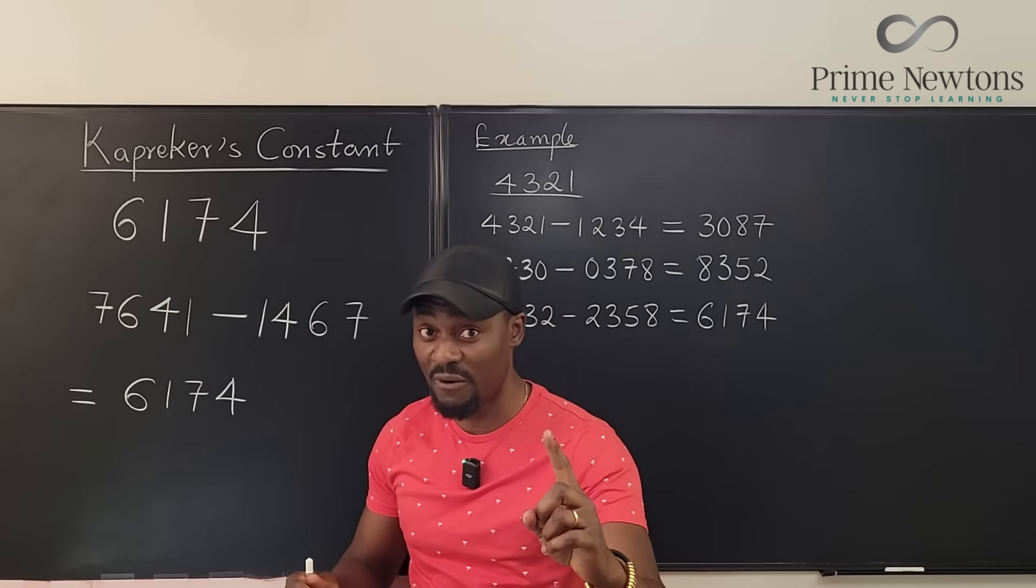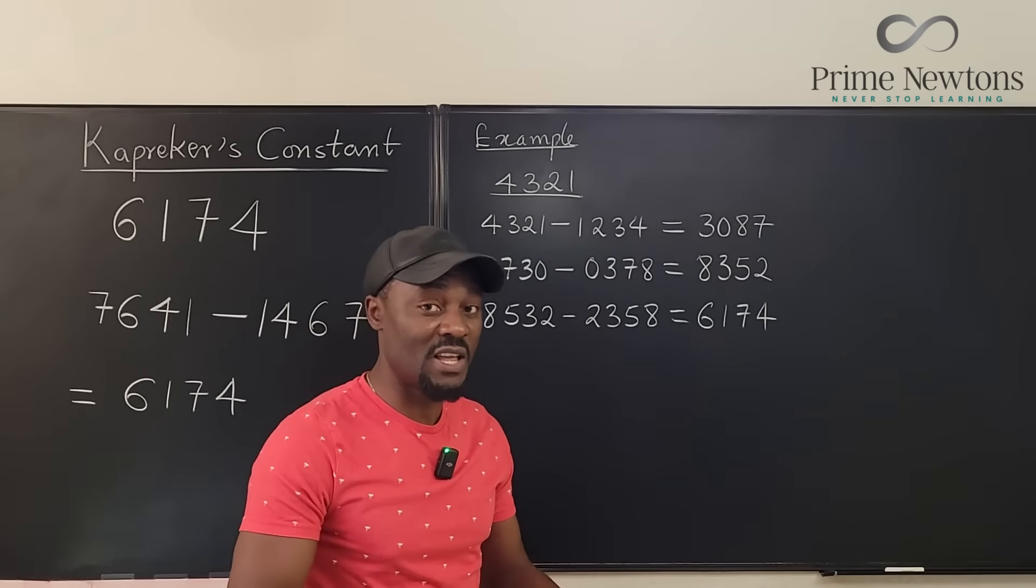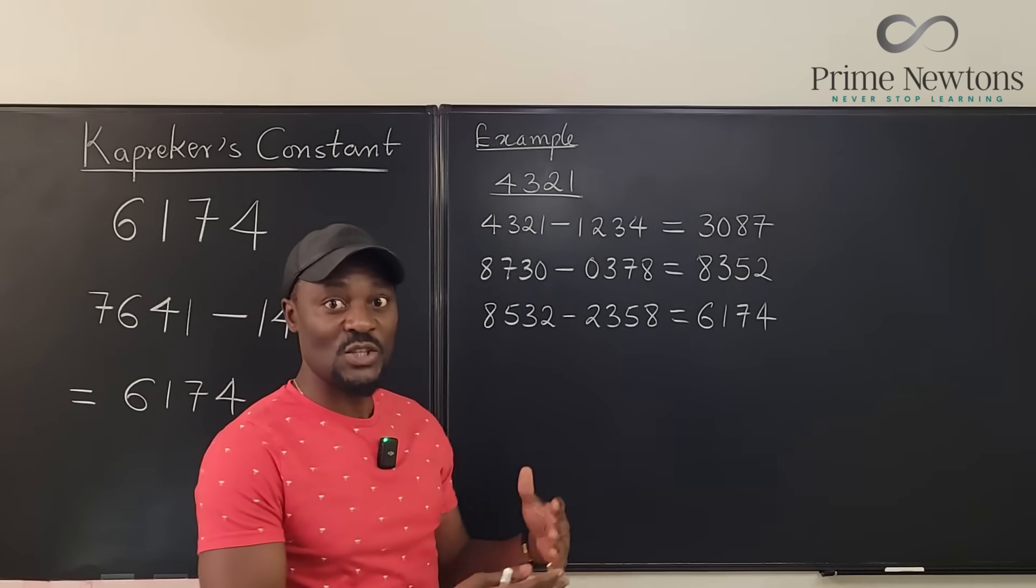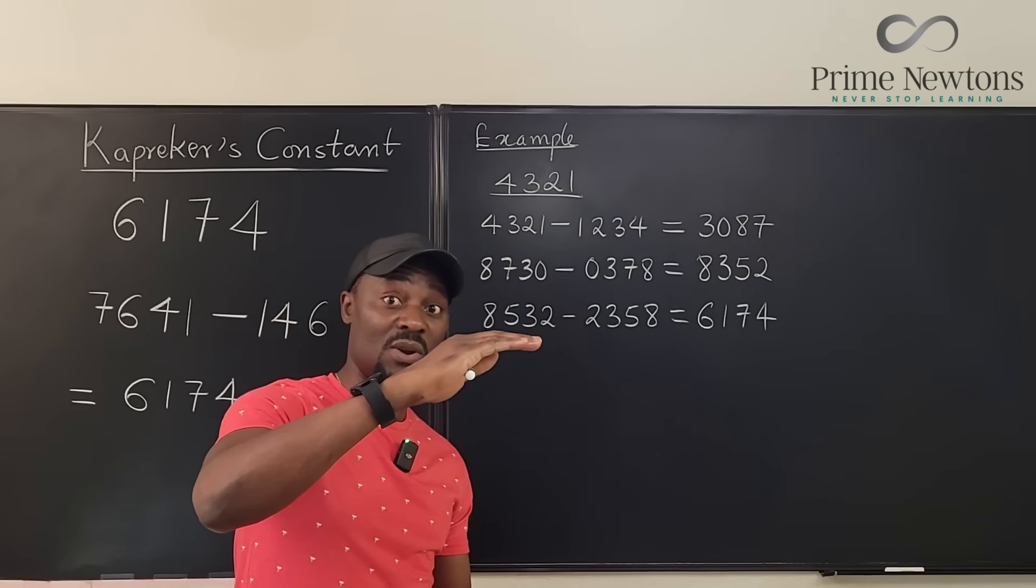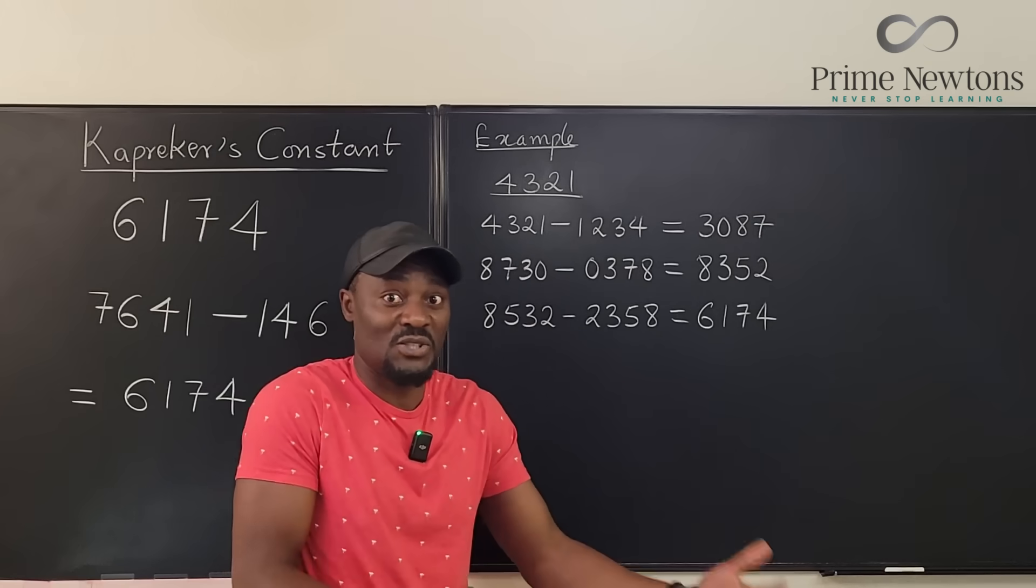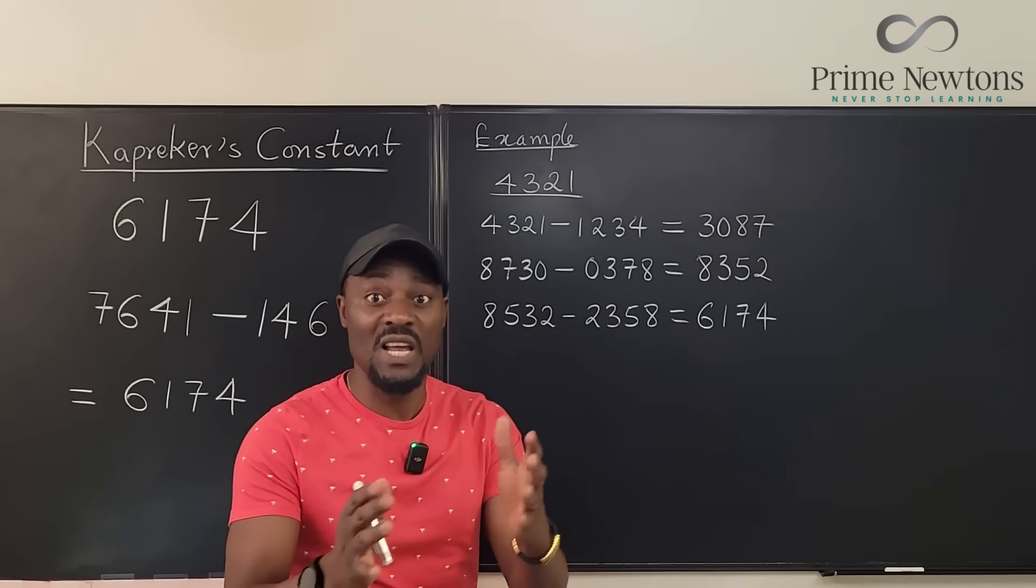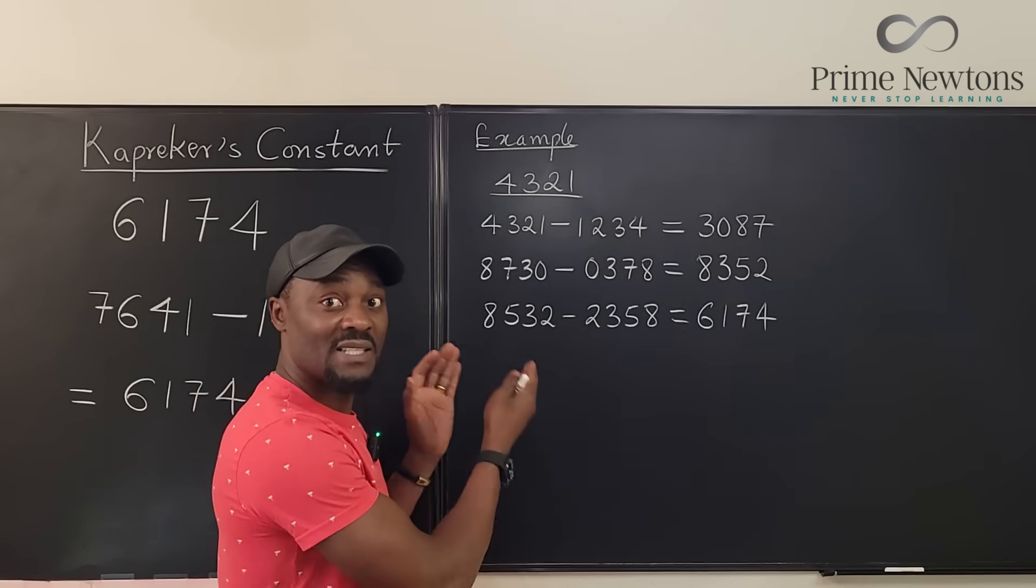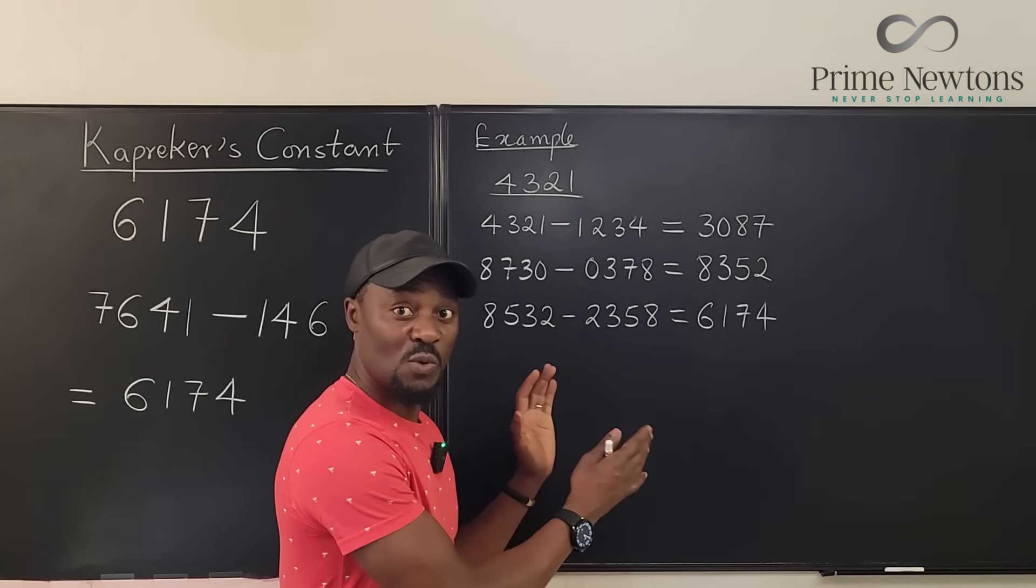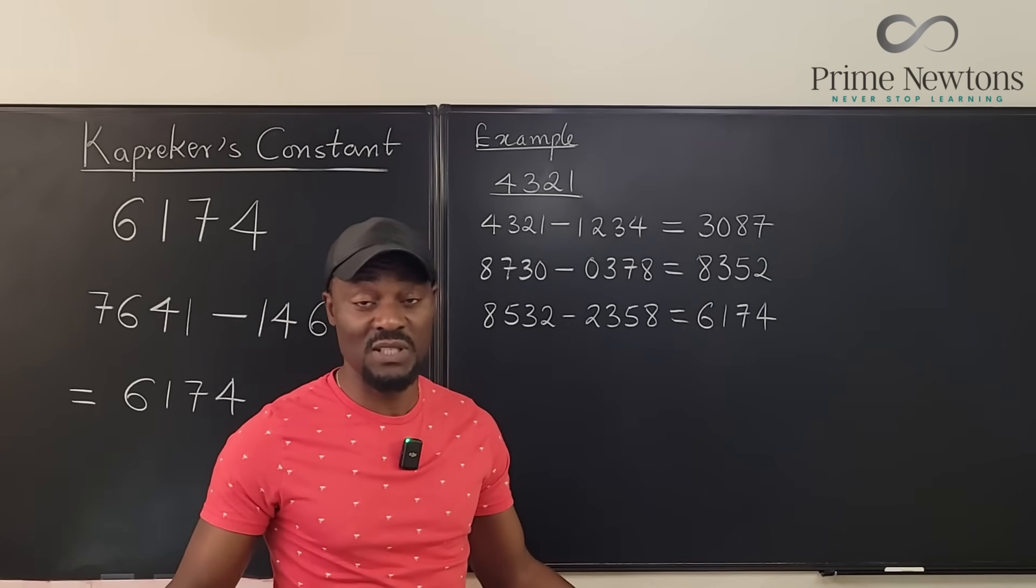However, before you go, there are some numbers that are going to give you a problem, especially numbers that all the digits are the same. You know, there's no difference between the biggest number and the smallest number. Like if you pick the number 2,222, well, the biggest number is 2,222. So you're going to end up at zero. So generally it is either you end up at zero or you end up at 6,174. So for this rule to work, your digits have to not be all the same. At least one of them has to be different.